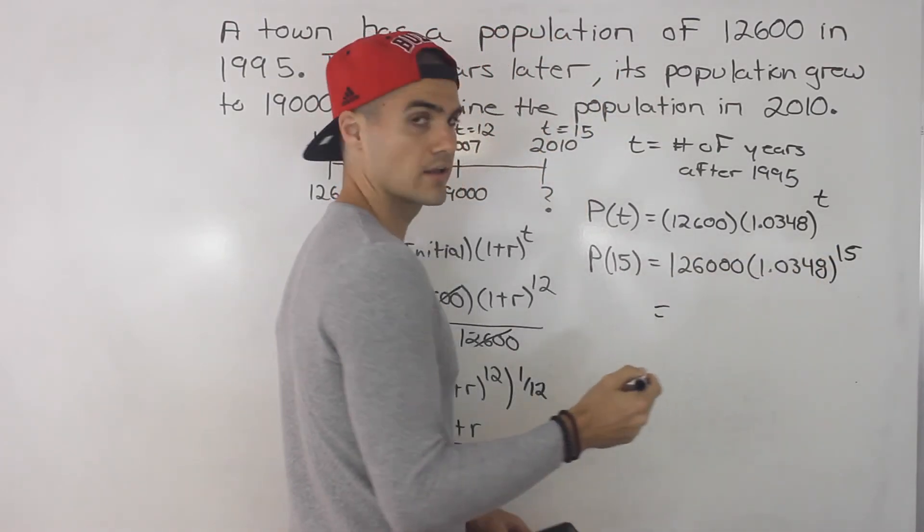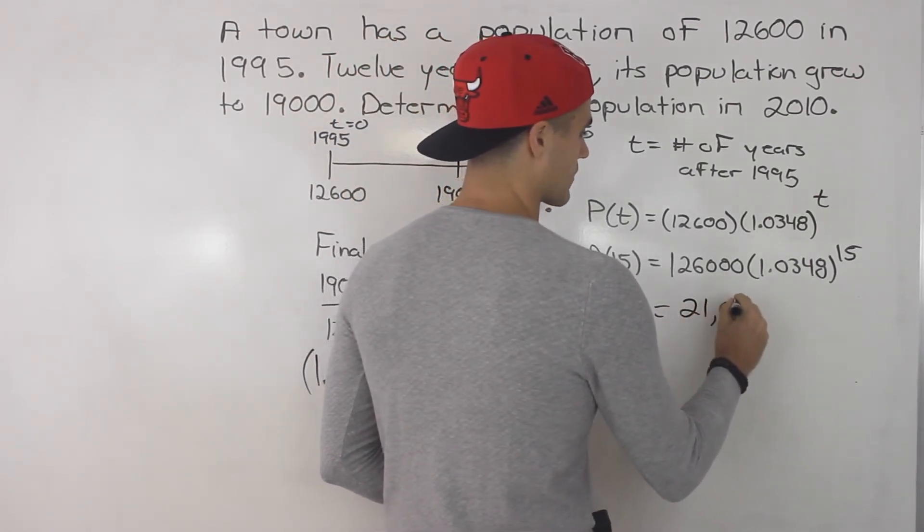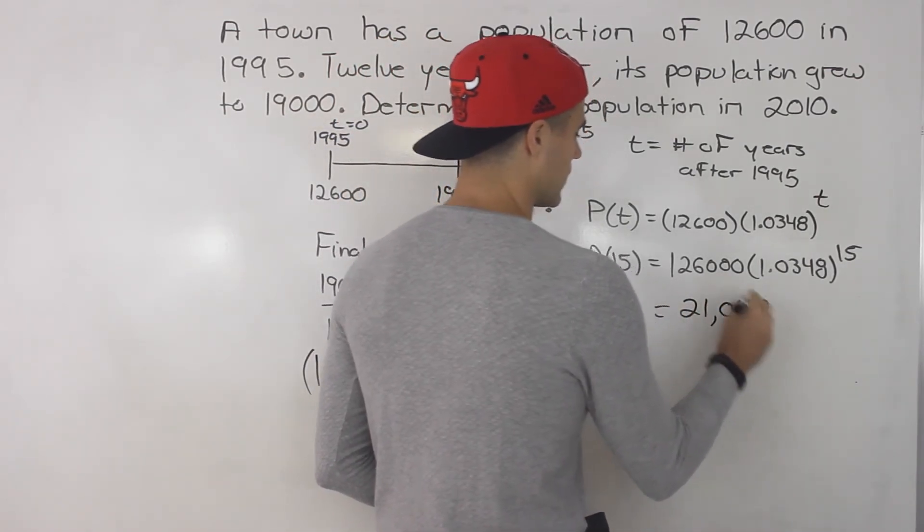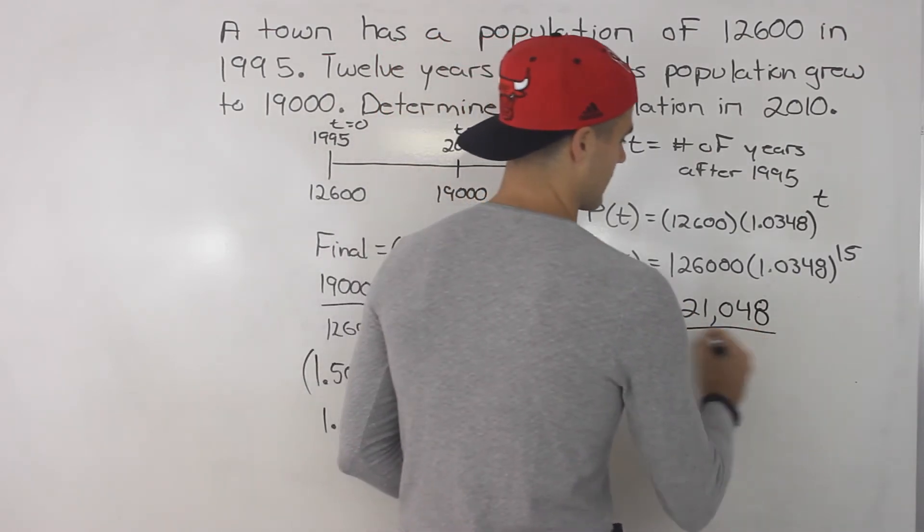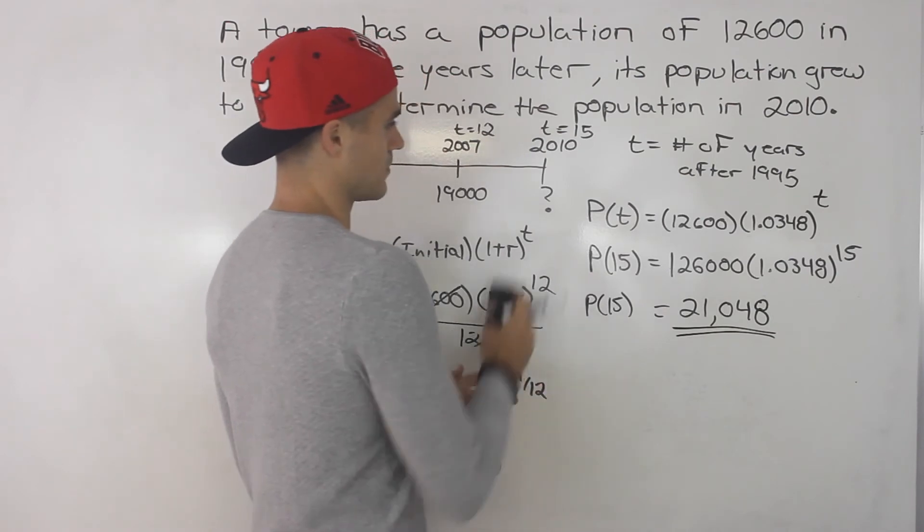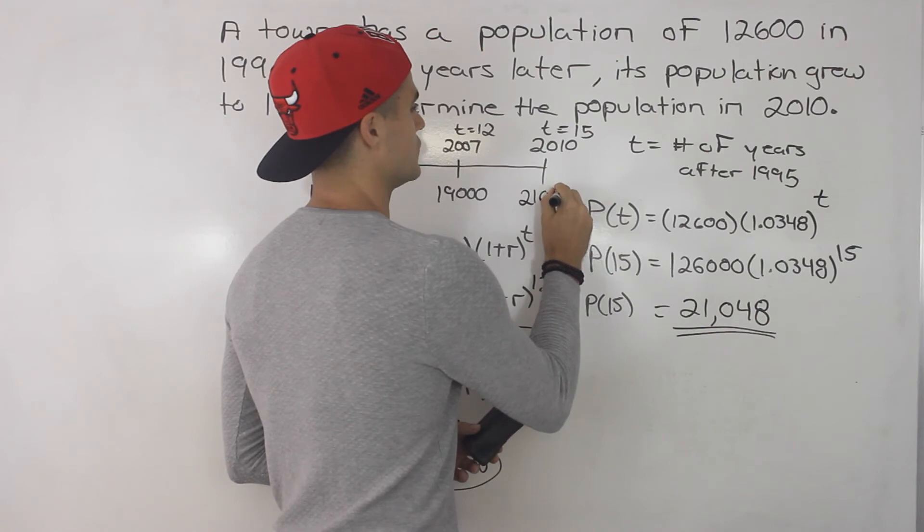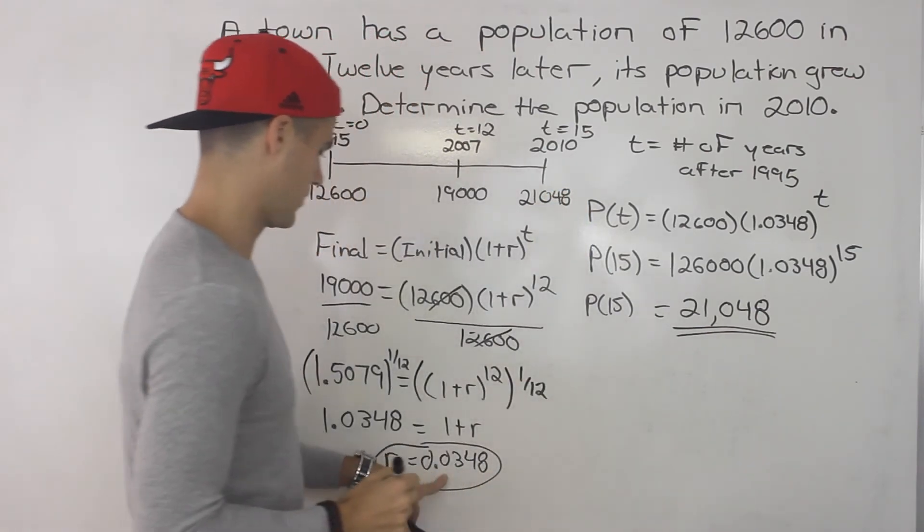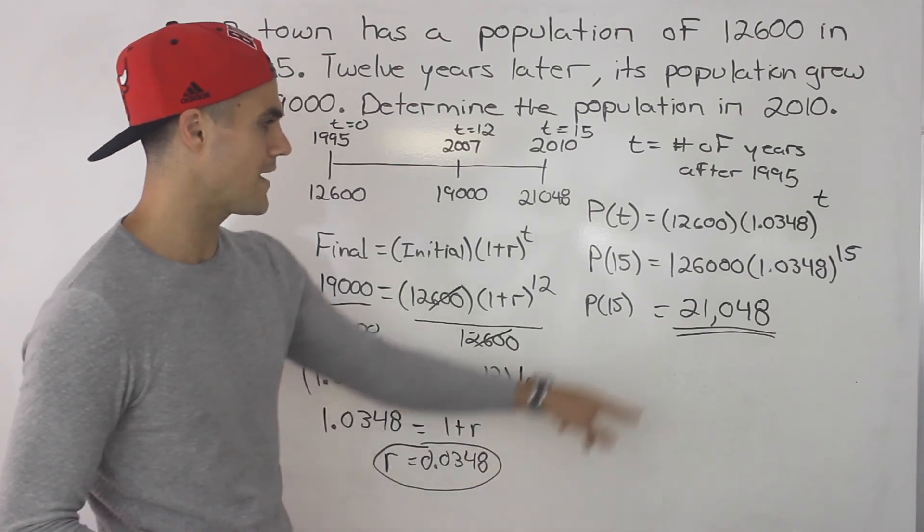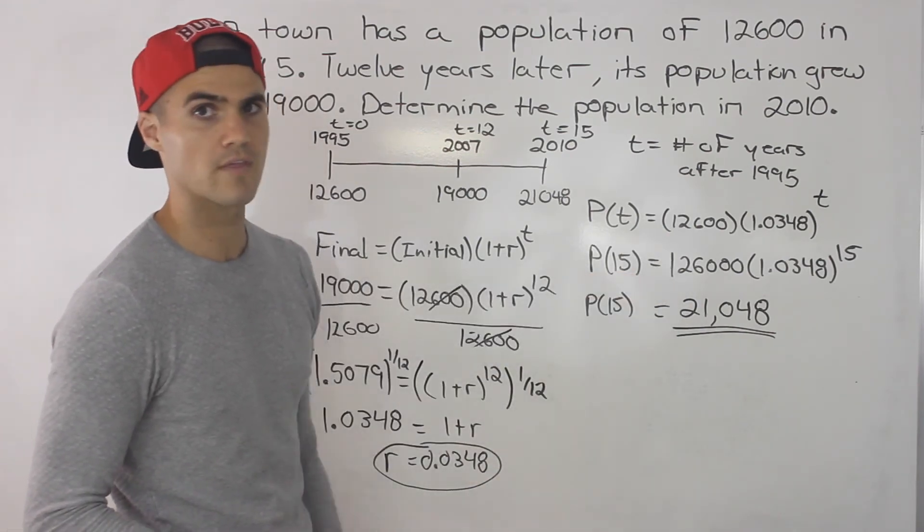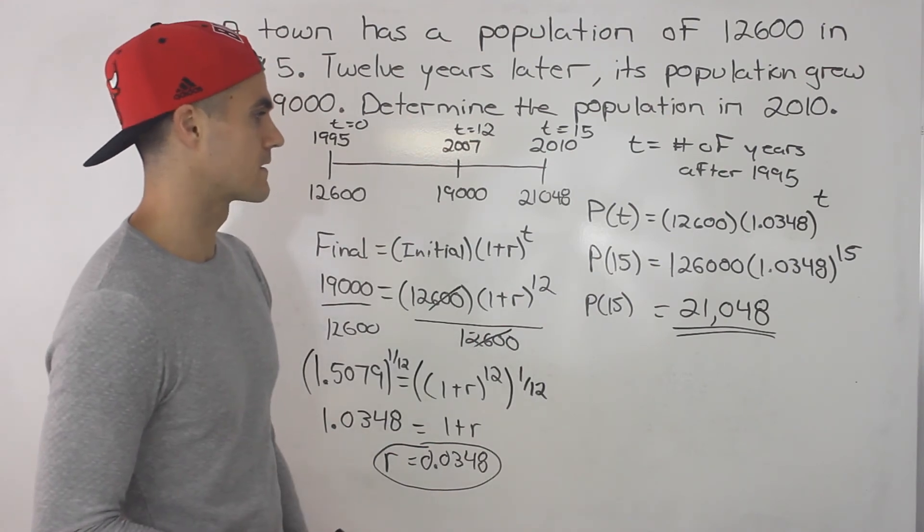And when you do all that in your calculator, you would end up getting 21,048, or a number somewhere around that. So that there is your final answer. That's what the population is going to be in 2010. Now, if you didn't round at this point and you kept a couple more decimal places, then you may get a slightly larger number than that. But the population is going to be somewhere around that.